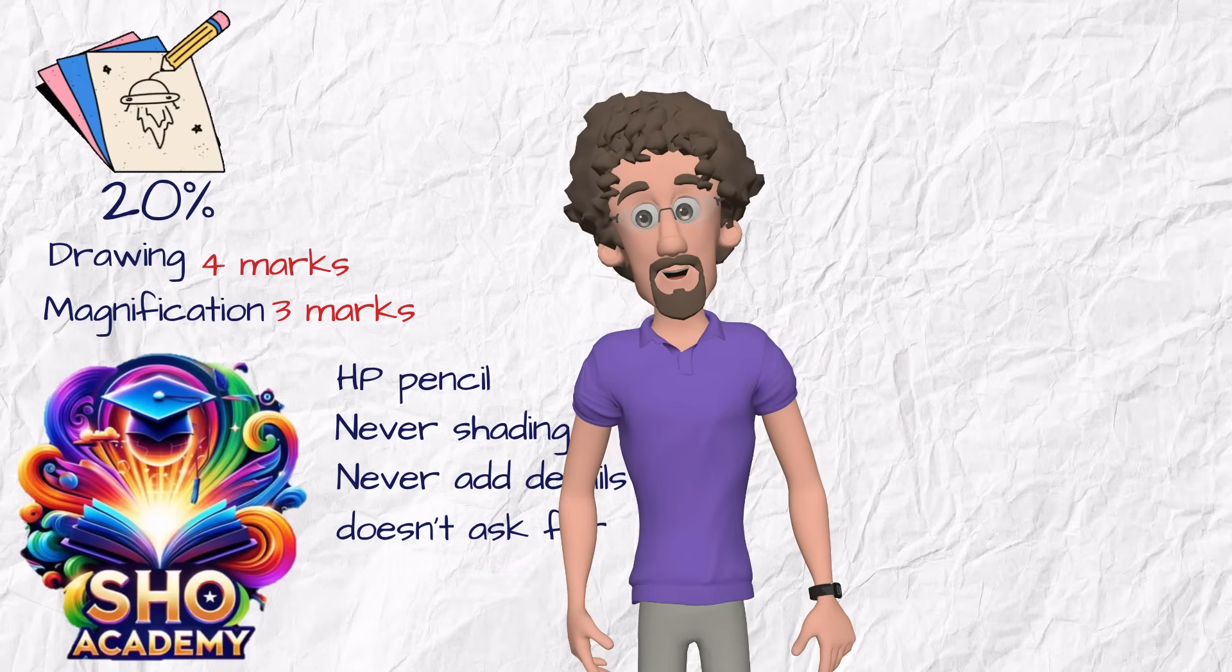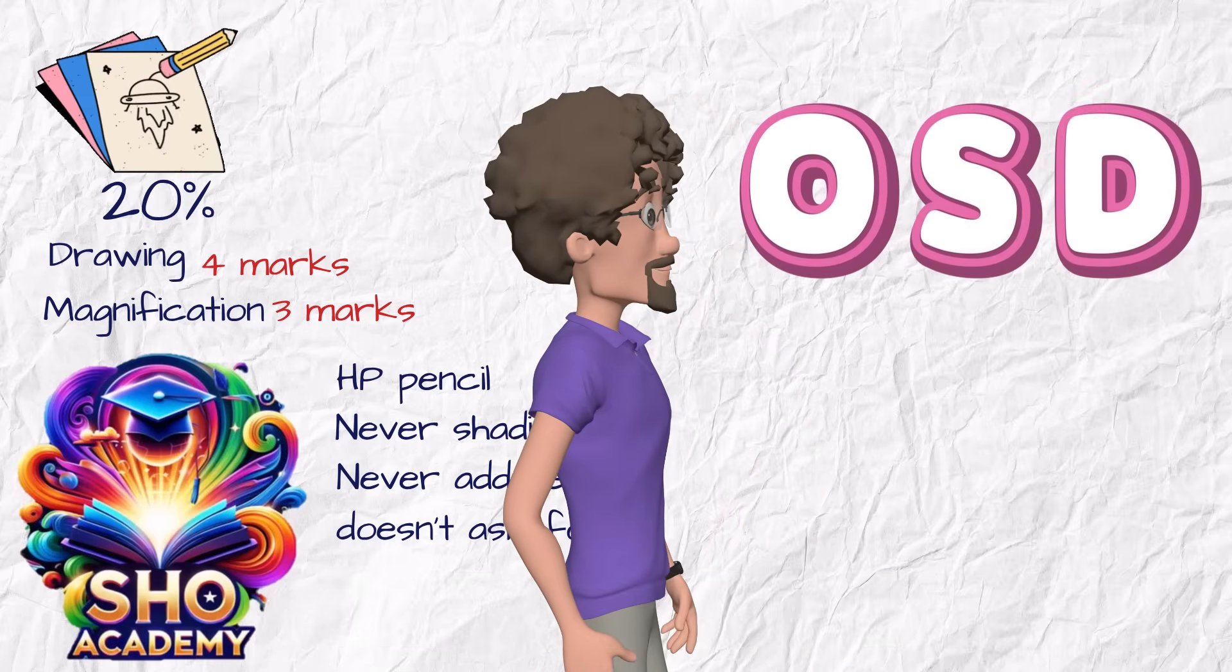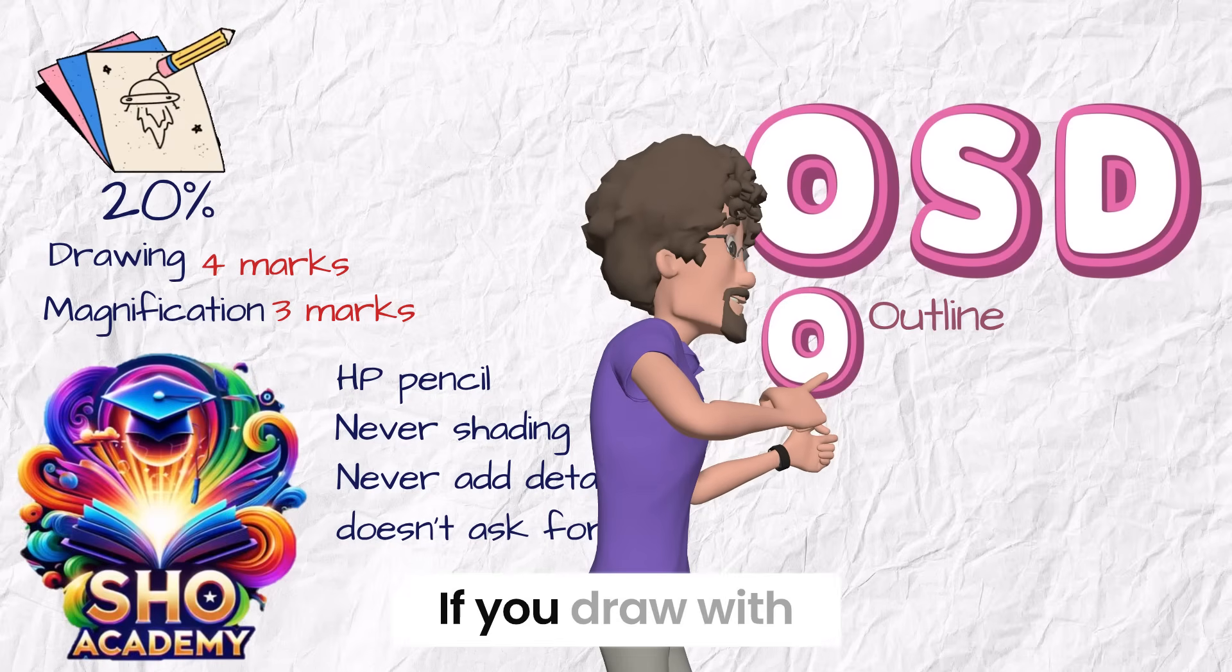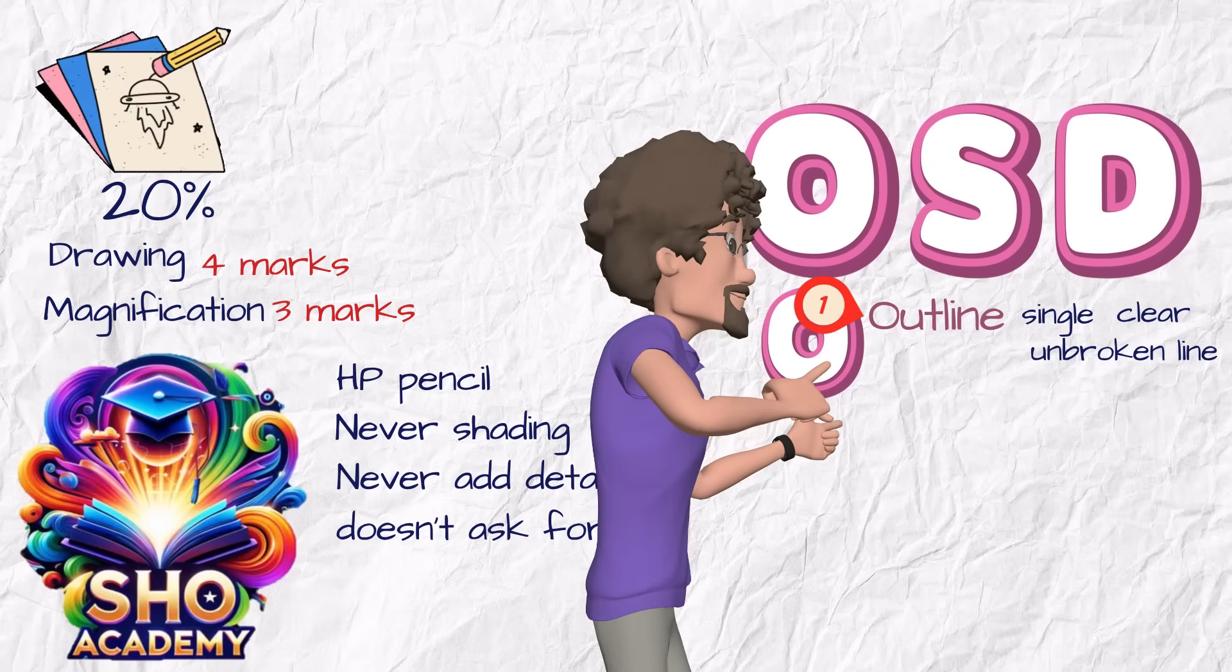Now let's agree on one important rule to collect the 4 marks of drawing. It's called the OSD rule. O costs one mark. It's about the outline. If you draw with a single, clear, unbroken line, you will get this mark. Easy.